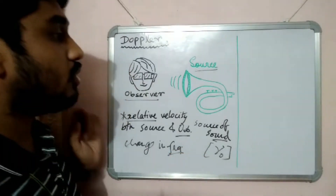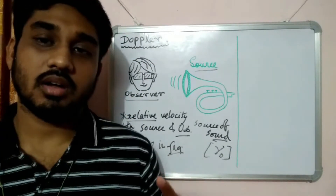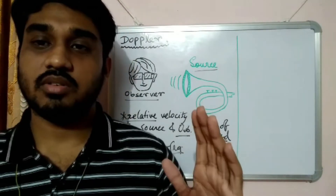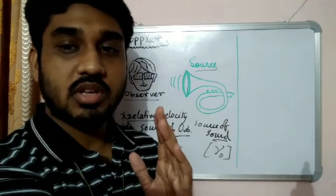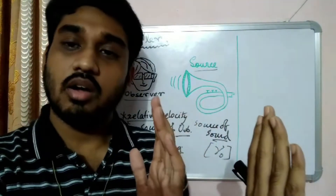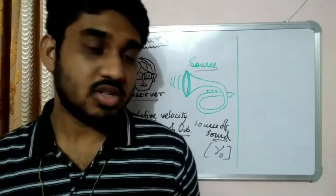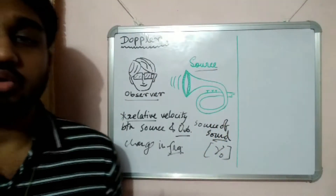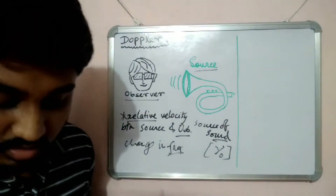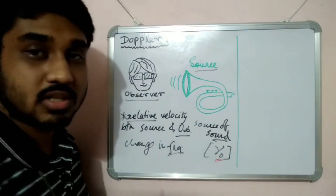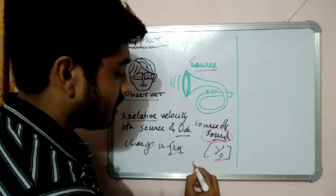Whenever a source or an observer has relative velocity — meaning the observer is coming towards the source, the source is coming towards the observer, the source is going far from the observer, or the observer is moving away from the source — there must be a change in the frequency of the sound emitting from that source. This is the Doppler effect. Not only in sound, but Doppler effect is also seen in light sources.